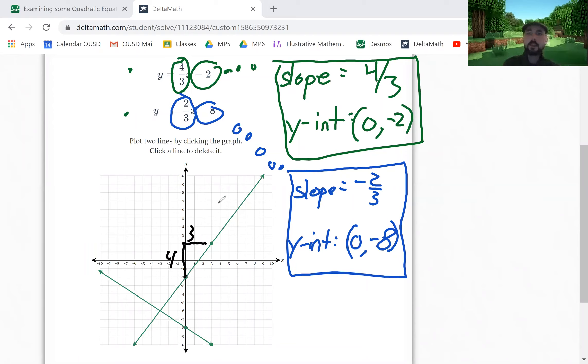The slope went up and over, right? Up 4, over 3. And for the other one, it went down 2 and over 3. The negative 2 was down 2, and then over 3 there.